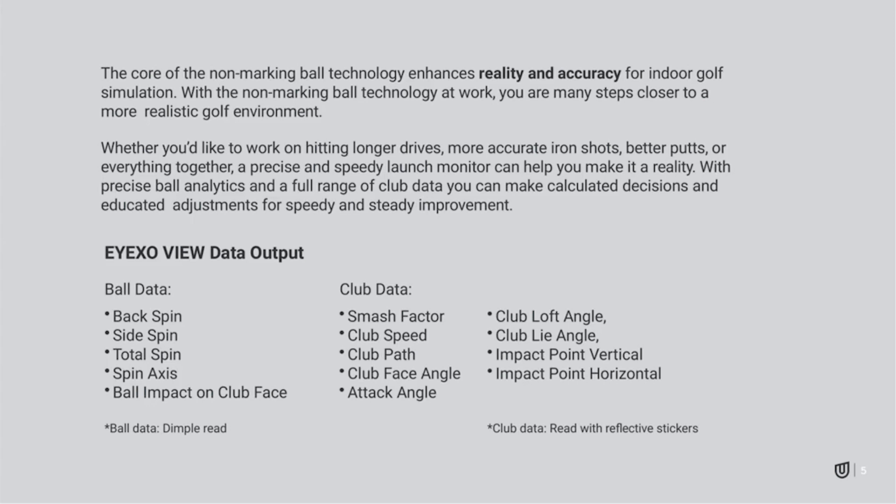Let's talk about the data points coming with the Unicore IXO. Ball data includes back spin, side spin, total spin, spin axis, and ball impact on the club face — you'll have a zoomed-in image showing where it hit on the club. Club data includes smash factor, club speed, club path, club face angle, attack angle, club loft angle, club lie angle, impact point vertical, and impact point horizontal. That club data can be read with reflective stickers for ultimate accuracy.